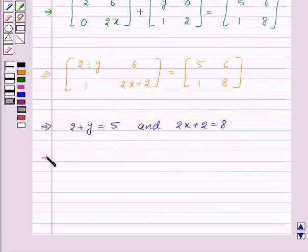So, 2 plus y is equal to 5 implies that y is equal to 3 and 2x plus 2 is equal to 8 implies that x is equal to 3. Thus, the value of x is 3 and the value of y is also 3.